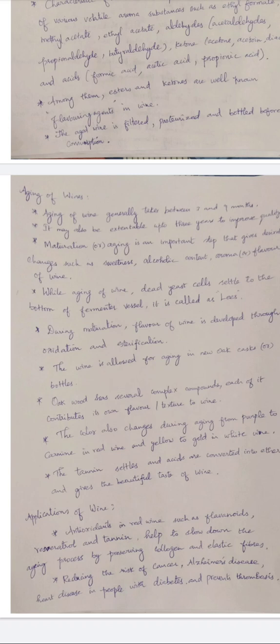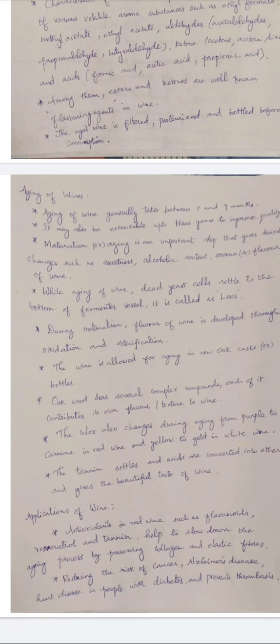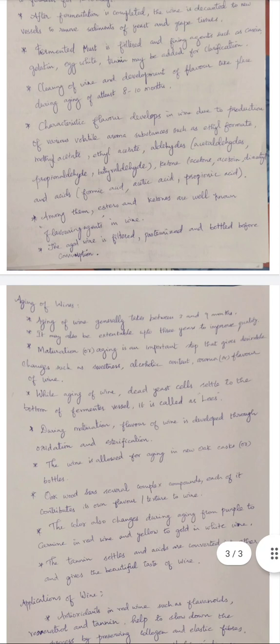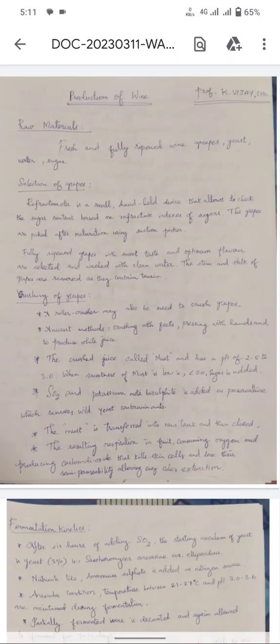Red wine is a good antioxidant and contains phytochemicals such as flavonoids, resveratrol, and tannin, which help slow the aging process by preserving collagen and elastic fibers. It also reduces the risk of developing cancer, Alzheimer's disease — a neurodegenerative disease where neurons get damaged — and several heart diseases. Additionally, wine helps prevent blood clotting disorders such as thrombosis and embolism. Overall, it helps maintain health when consumed at a limited level.